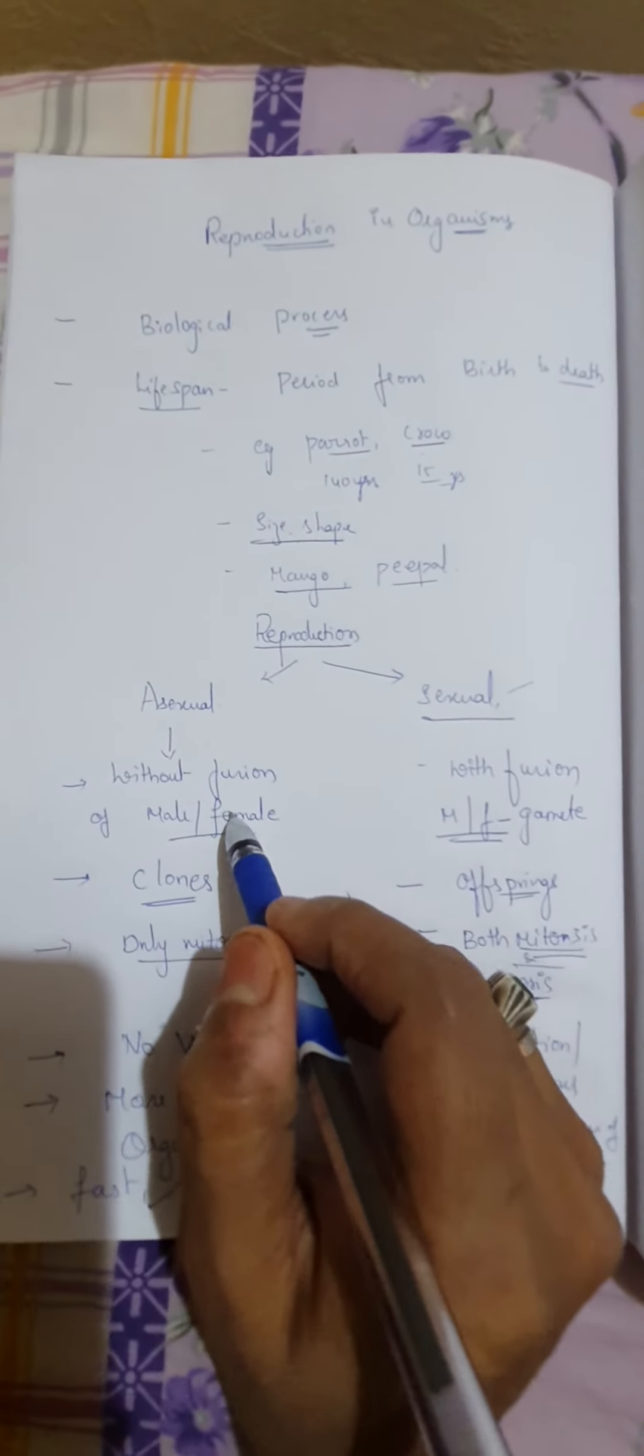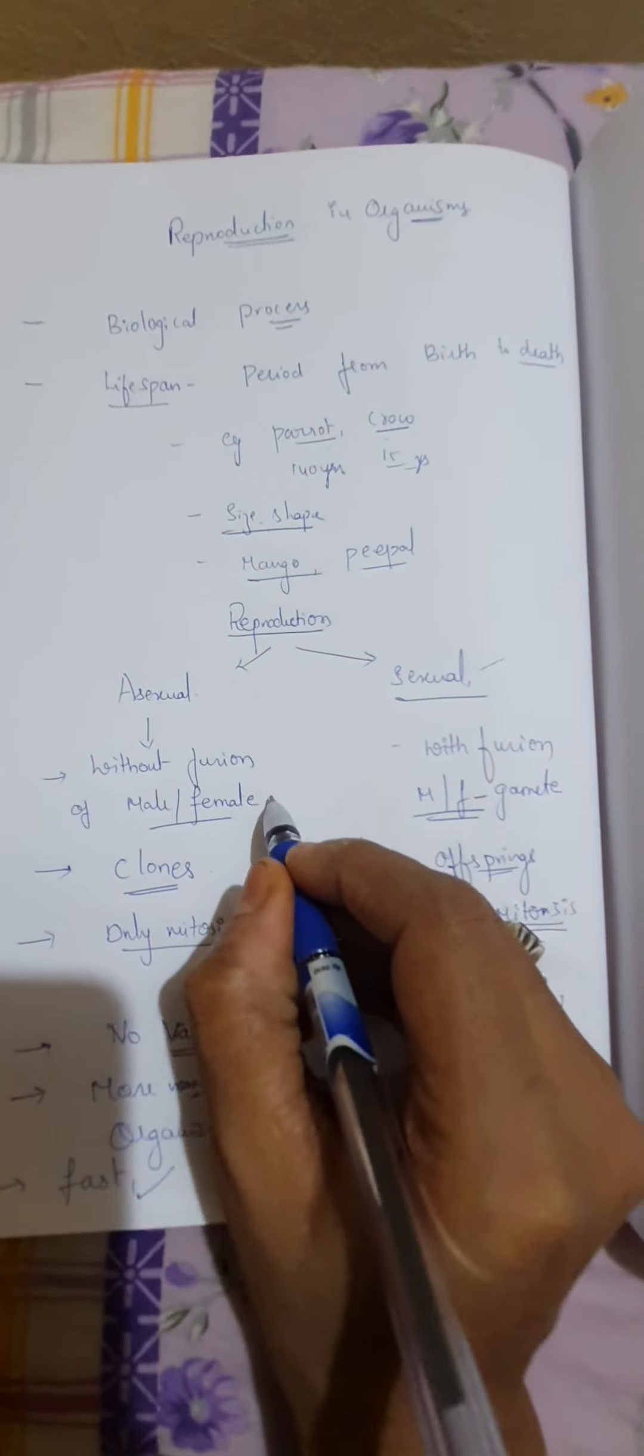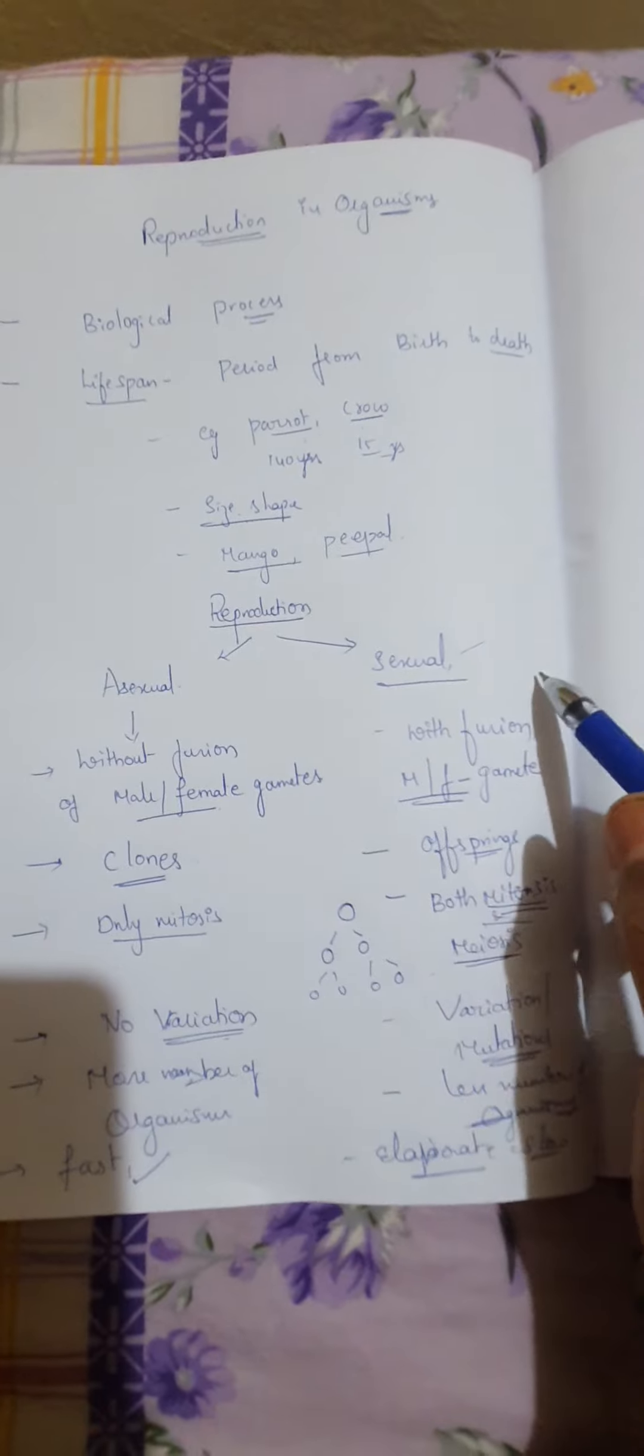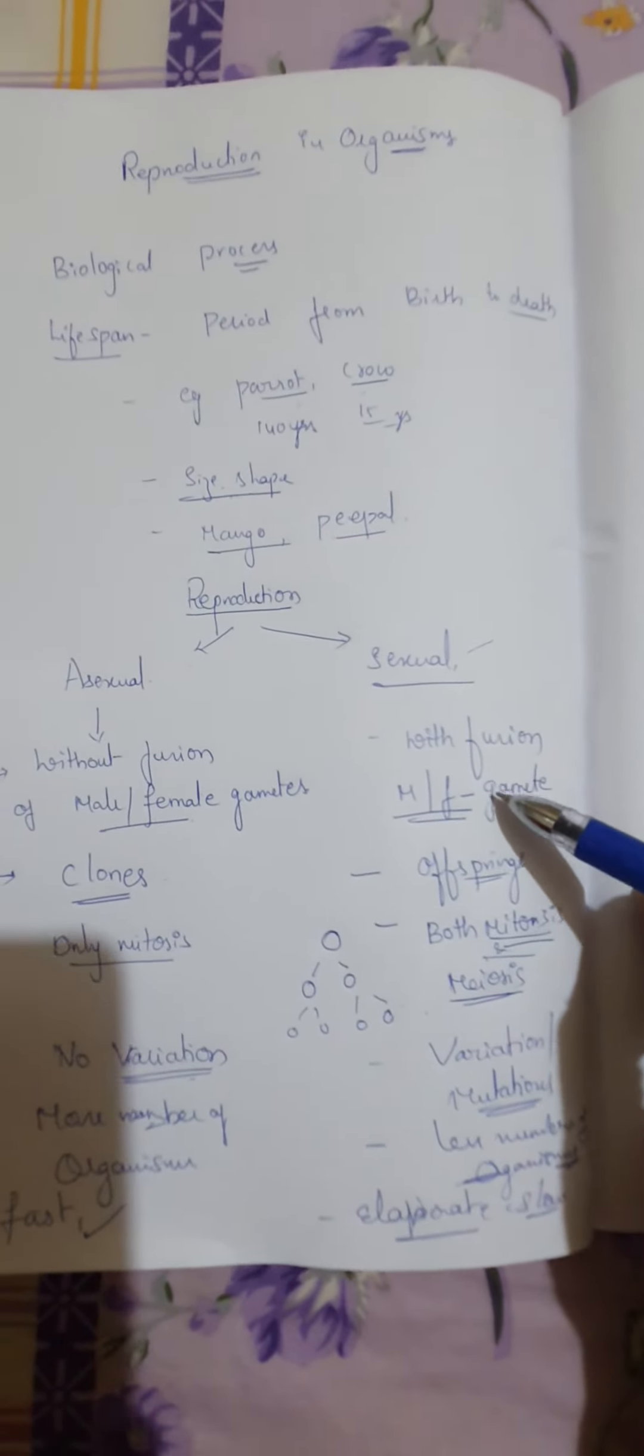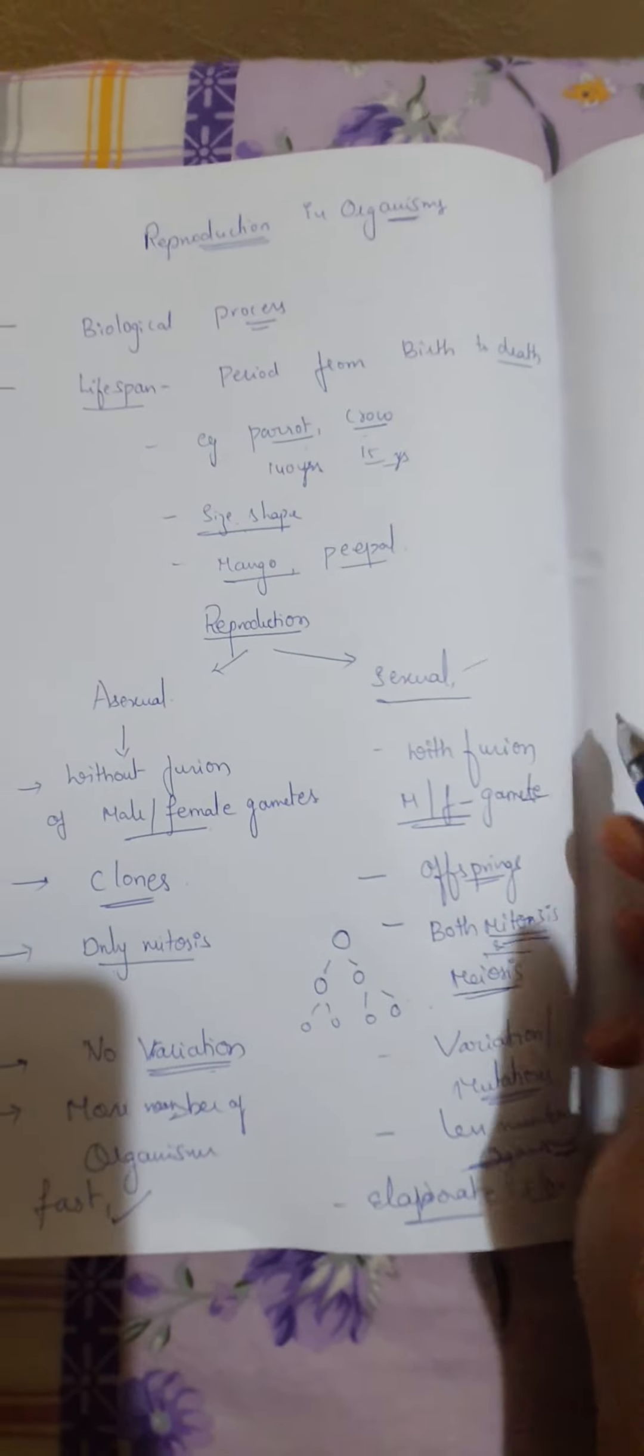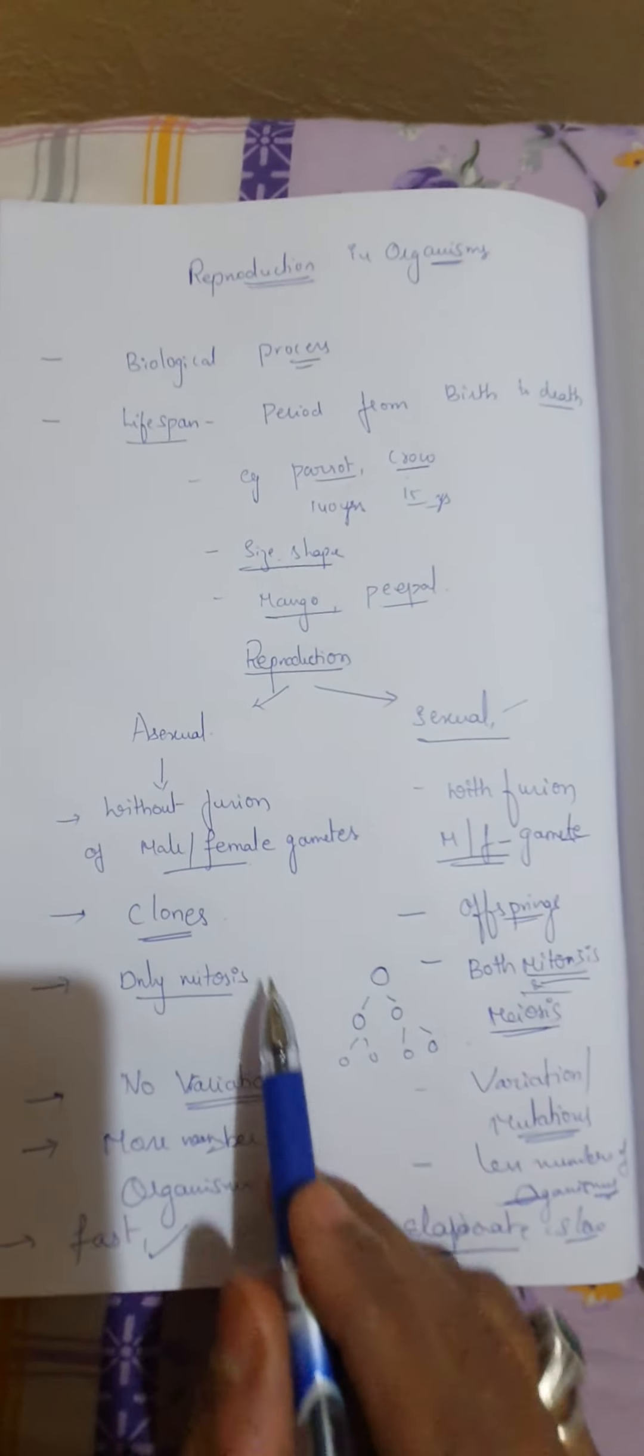Asexual means without fusion of male and female gametes. Without fusion of male and female gametes. And sexual reproduction means with fusion of male and female gametes. Gametes means sex cells. There is a fusion of male and female sex cells.